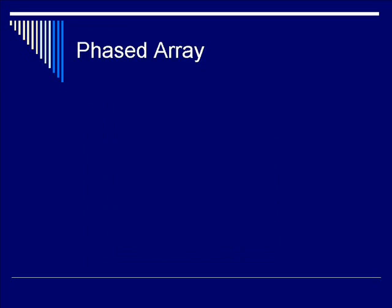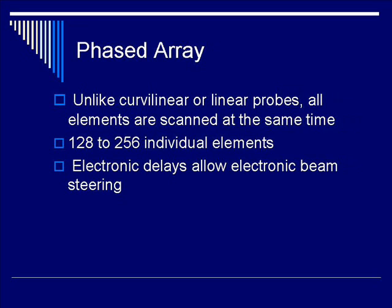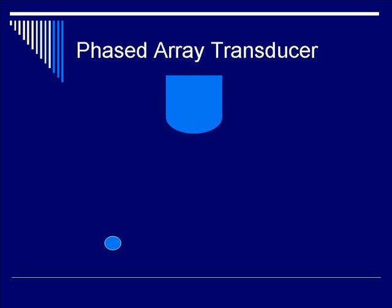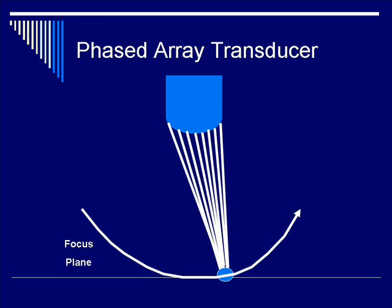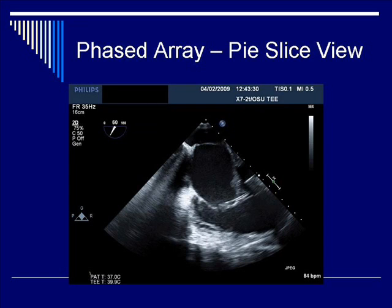Let's move on to the phased array. A phased array is different from linear or curvilinear arrays because all elements are scanned at the same time. It consists of 128 to 256 elements. Electronic delays allow the beam to be steered precisely. Beam focusing is done electronically, and it produces a pie slice scan pattern. Notice all elements are steered at the same time, focused going from left to right, steering at the same plane of interest. Clinically you can measure through a scan with the typical pie slice view.